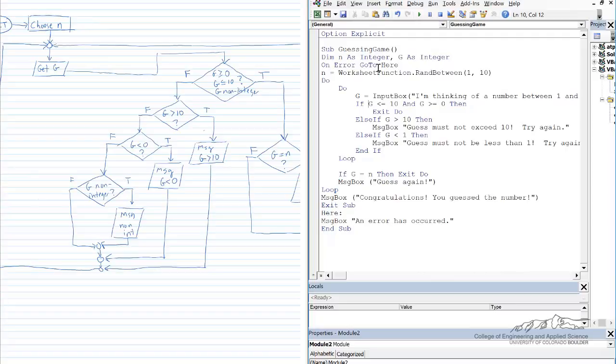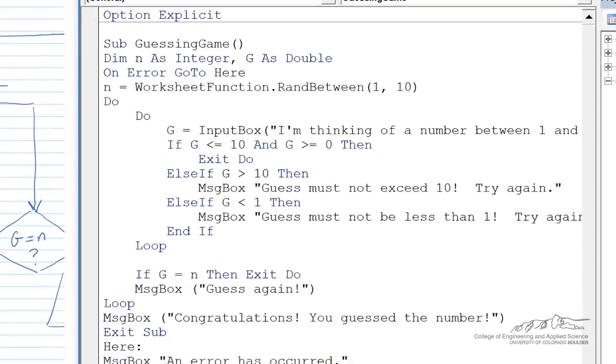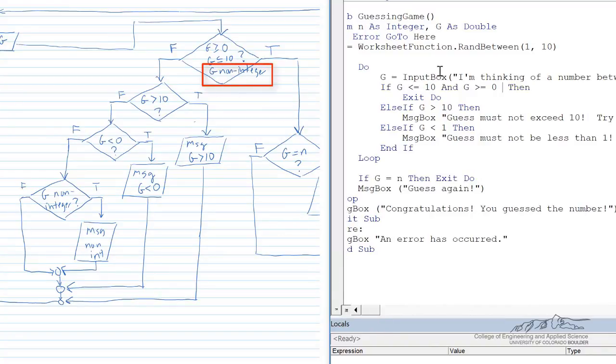First of all, in order for us to differentiate between an integer and a non-integer, I have to change the data type of G to a double. Next, now we've got here in the flowchart three conditions that have to be true. We've added on the non-integer, so I'm going to add in onto this line, we have to have three things that are satisfied.